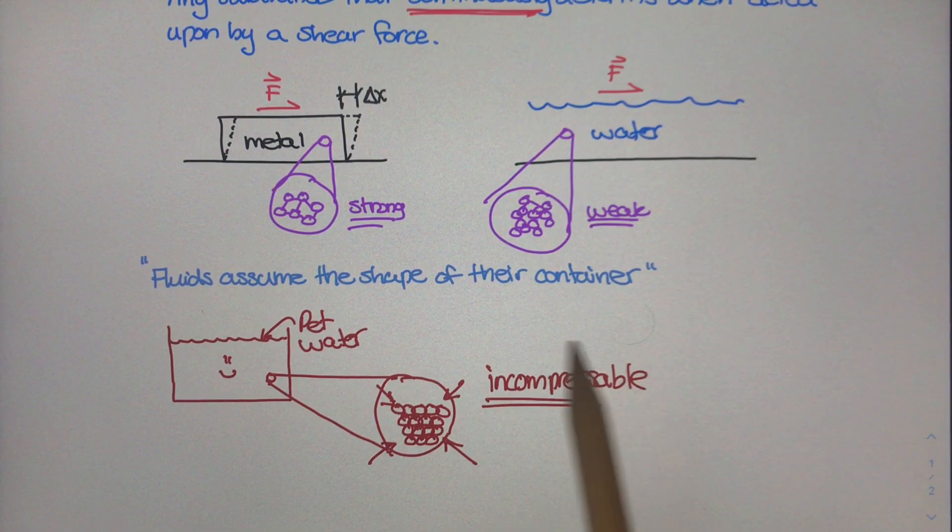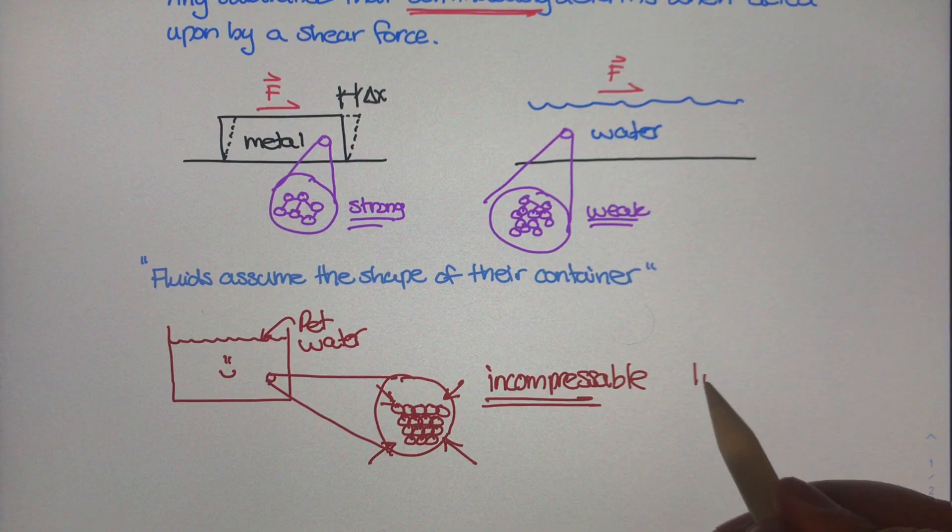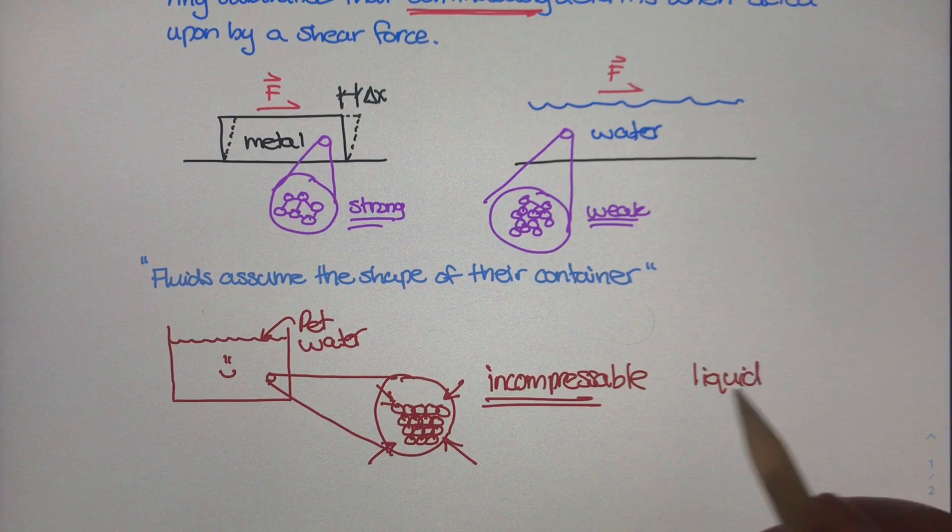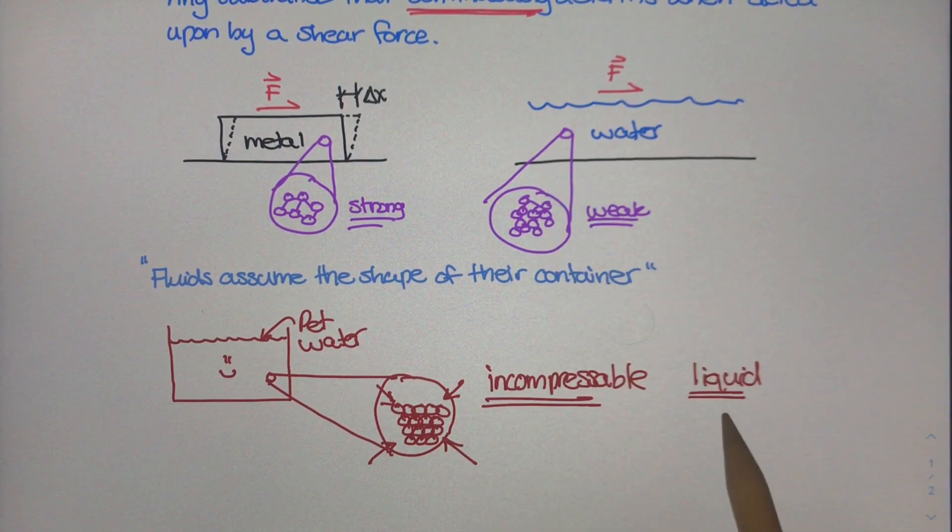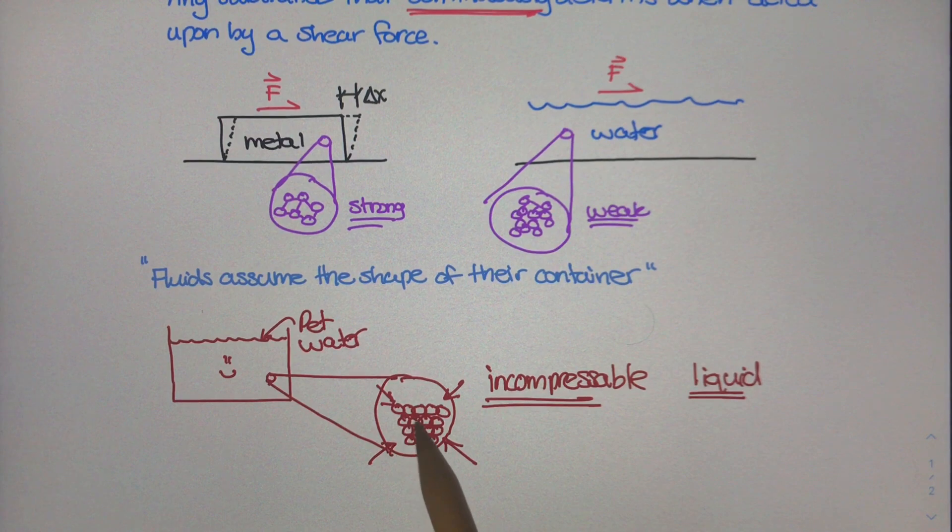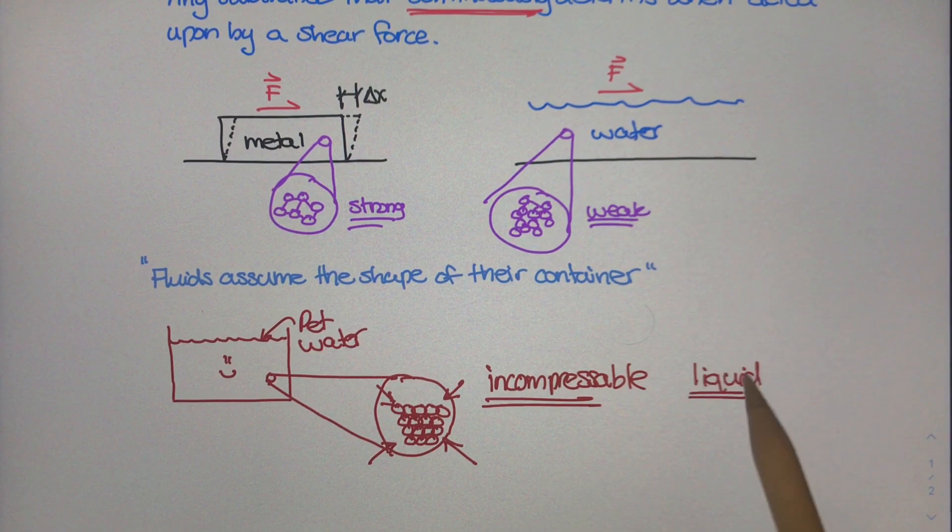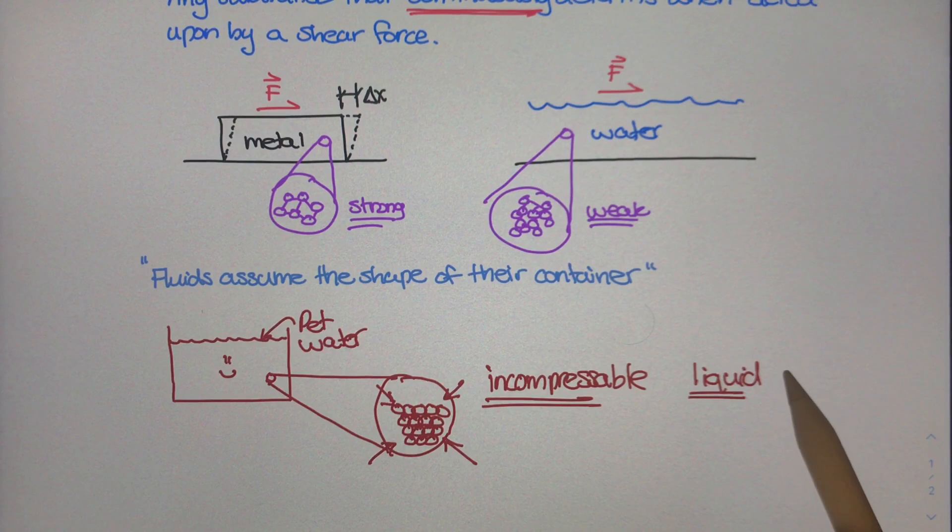But there's actually a special word for incompressible fluids, and we call that liquids. So we know that water is a liquid. But it's a liquid because the water molecules are incompressible. You can't physically push the molecules any closer than they already are. And because of that definition, water is a liquid. And a liquid is just one type of fluid.